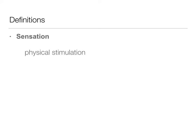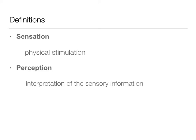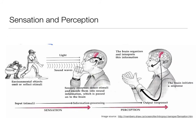Sensation is that physical stimulation, whereas perception is that interpretation of that sensory information. So typically what we have is sensation coming first, and that can be any kind of stimulation. In this case, we see light and sound waves as that input, that stimuli, that sensation. What then happens is we have perception — the brain organizes and interprets that information it got from the senses, in this case the eyes and the ears, and it interprets those and often initiates a brain response.